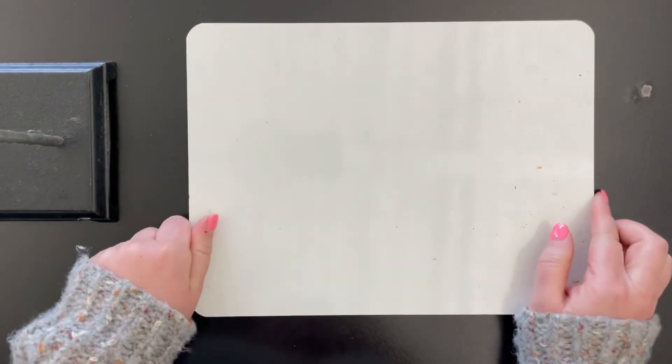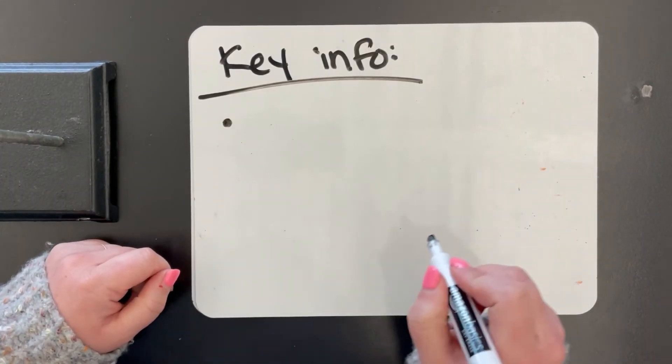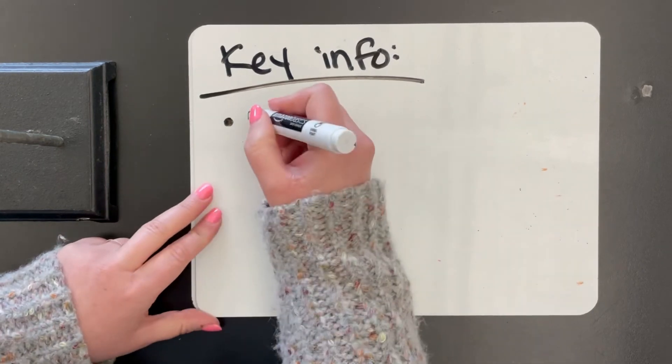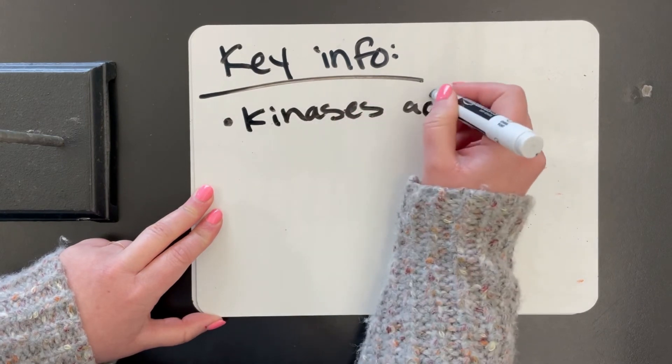And then a couple other key points before we go. So one, the enzyme that adds phosphates, the enzyme that does phosphorylation is called a kinase. So kinases add phosphates.